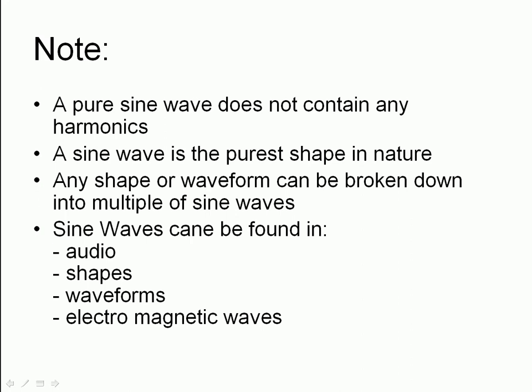A pure sine wave doesn't contain any harmonics — there's no harmonic content in there. A sine wave is the purest shape in nature. As an electronics engineer, all we're interested in is recognizing a signal on an oscilloscope and seeing how well the signal works and whether there's any distortion. As soon as you find distortion, you've got harmonic content. At that point, you have to put in filter networks to contain the distortion.